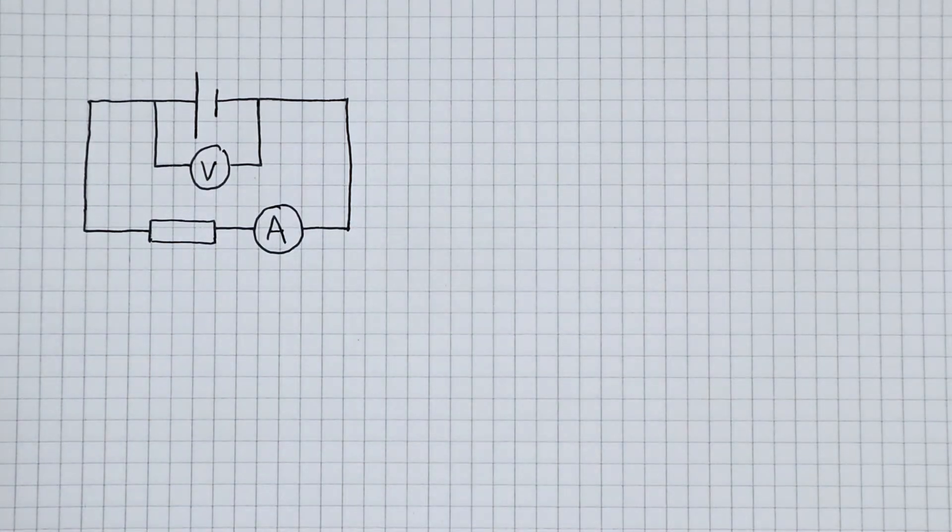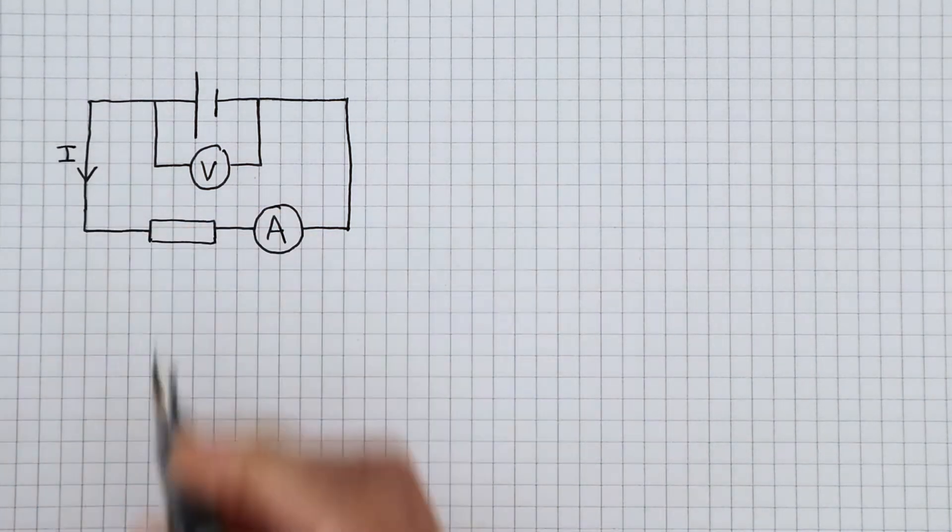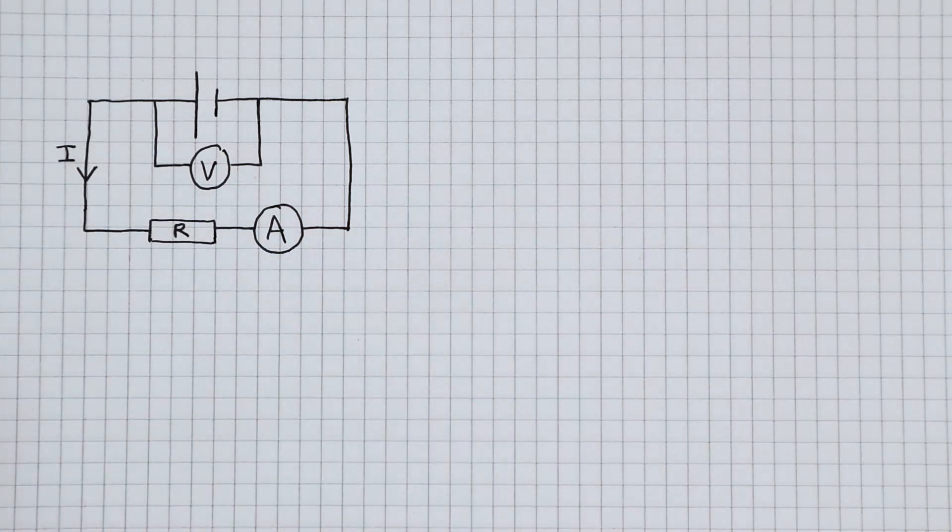It gives us a reading of the terminal potential difference. We get a current reading from the ammeter. The resistor in the circuit is known as the load resistance, we give it a capital R.